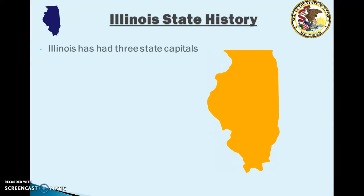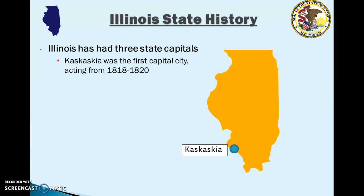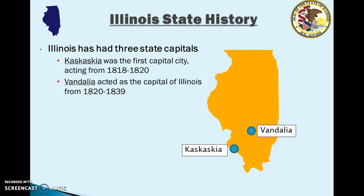Illinois has had three state capitals in its history. The original capital was Kaskaskia, located in the southwest portion of the state right along the border with Missouri. Kaskaskia was the capital from 1818 to 1820, and then it was replaced by Vandalia, which acted as the capital of Illinois from 1820 to 1839.